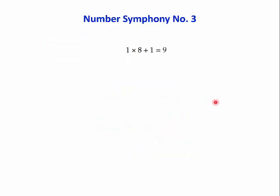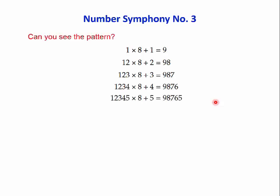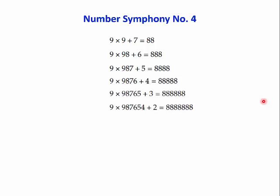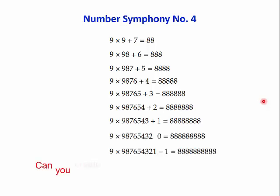Symphony number three. One times eight plus one equals nine. Twelve times eight plus two equals ninety-eight. And again here, we've got a pattern developing. Can you see the pattern? Can you extend it? Can you explain it? This is a lovely way of teaching children through patterns. Here's another one. Can you create a symphony of your own?